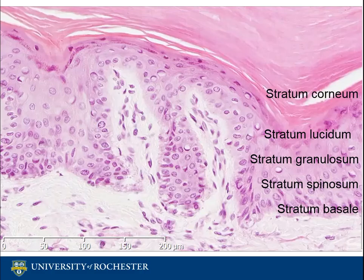The stratum corneum is also called the horny layer, and it's the keratinized layer. It appears as a basket weave pattern of multiple layers of polyhedral cells without nuclei. It is a broad zone of roughly 20 to 30 cells and serves as a protective, durable overcoat. Due to keratinization, it is waterproof and strong. In tissues such as the palms of the hands and the soles of the feet, this layer is very pronounced.